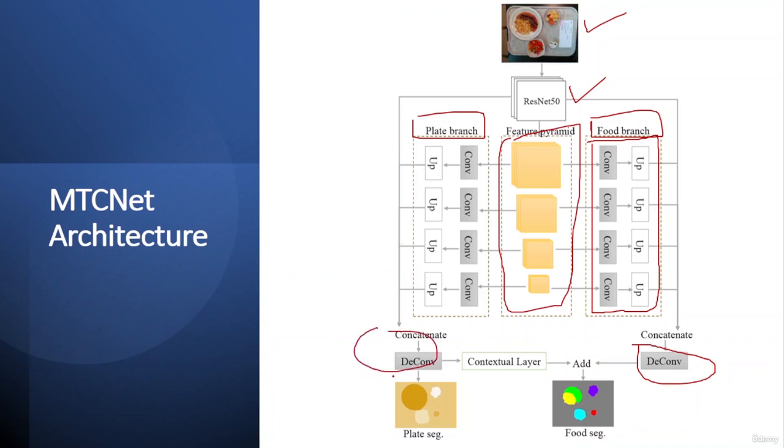On the plate branch side, you can see after the convolution layer there is a plate segmentation. But for food segmentation, the contextual layer is applied on the plate branch features and then it is added to the food branch, and then you can see there is a prediction for the food.